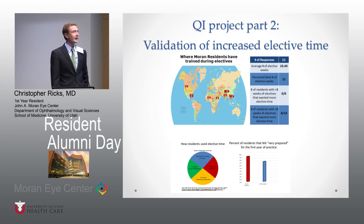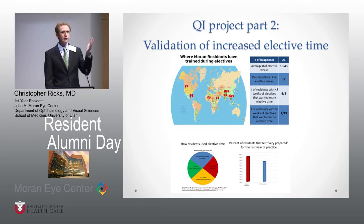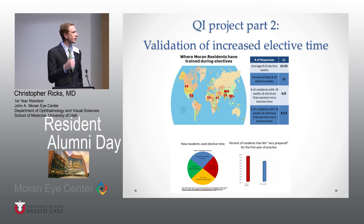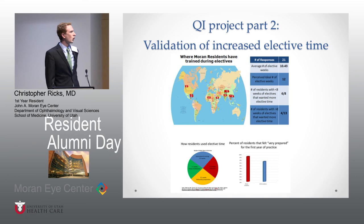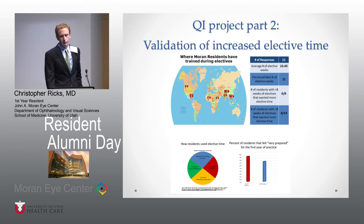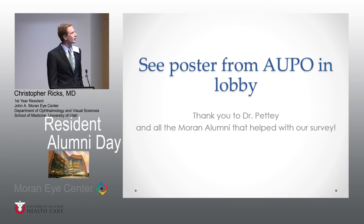Part two of this project was validating the increase in elective time. A lot of the alumni may have received a survey from Dr. Petty asking what they did with their elective time, how it helped, and what they would change. Uses include international work, research, boosting areas of deficiency, and preparing for fellowships — spanning locations all over the world. We see about a 10% self-perceived increase in preparedness from our program.